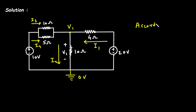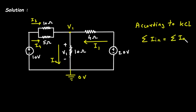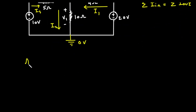According to KCL — Kirchhoff's Current Law — the sum of all currents entering a node is equal to the sum of all currents leaving the node. Now we will apply KCL at node V1.